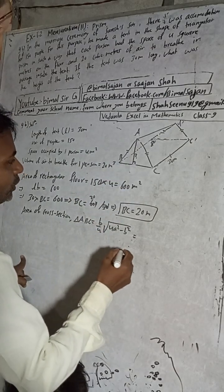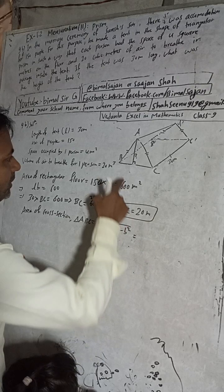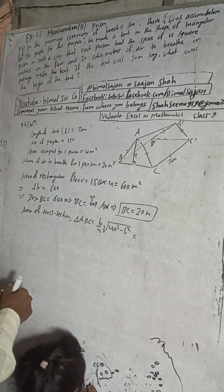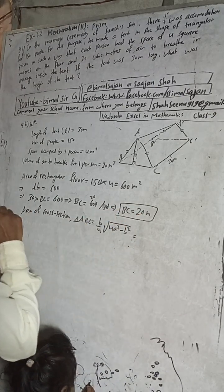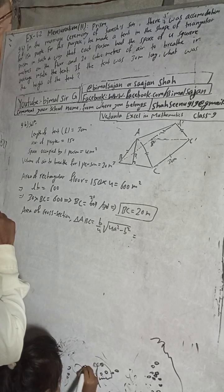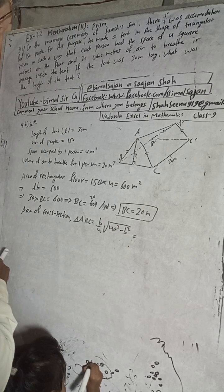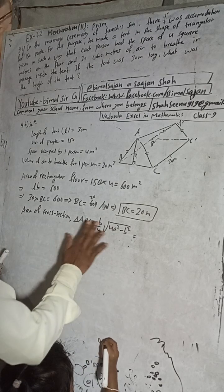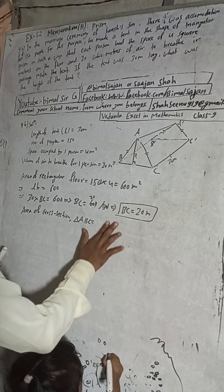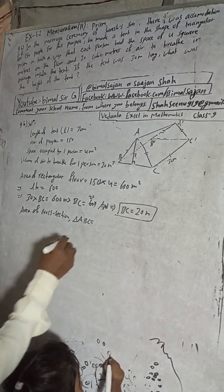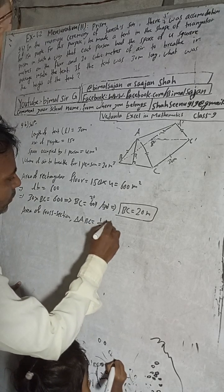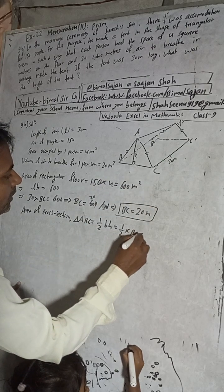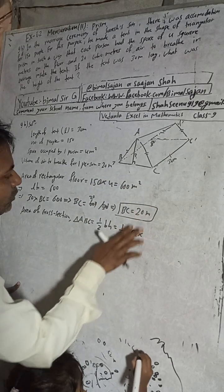Area of this triangle. This is an isosceles triangle because two sides are equal. So area of this cross section isosceles triangle, the formula is b by 4 root under 4a square minus b square. And this b is the base. So base we don't know, so keep as it is. BC we got and AC we don't know.